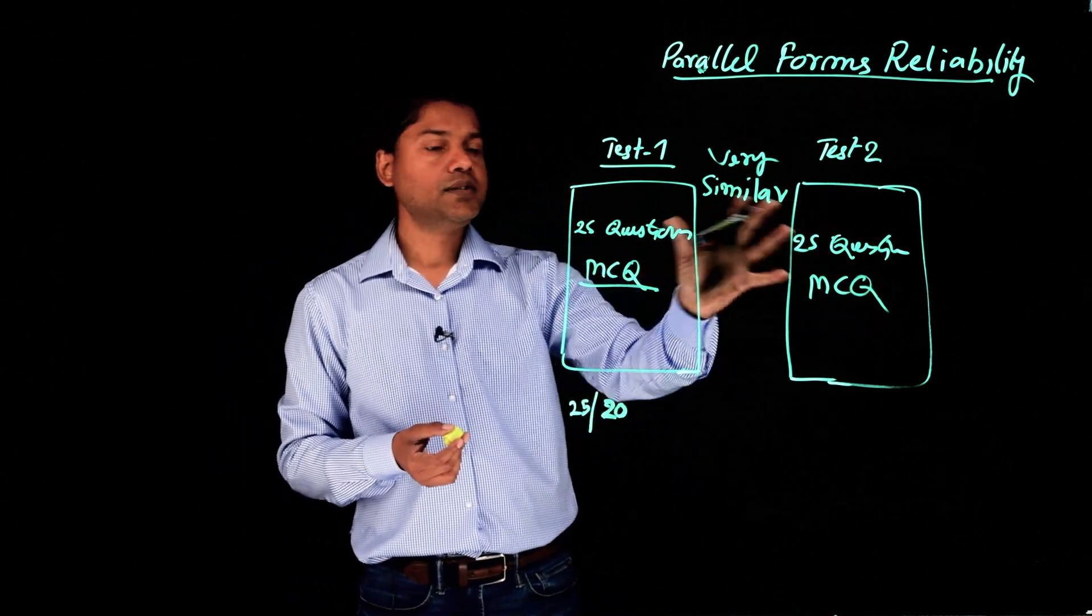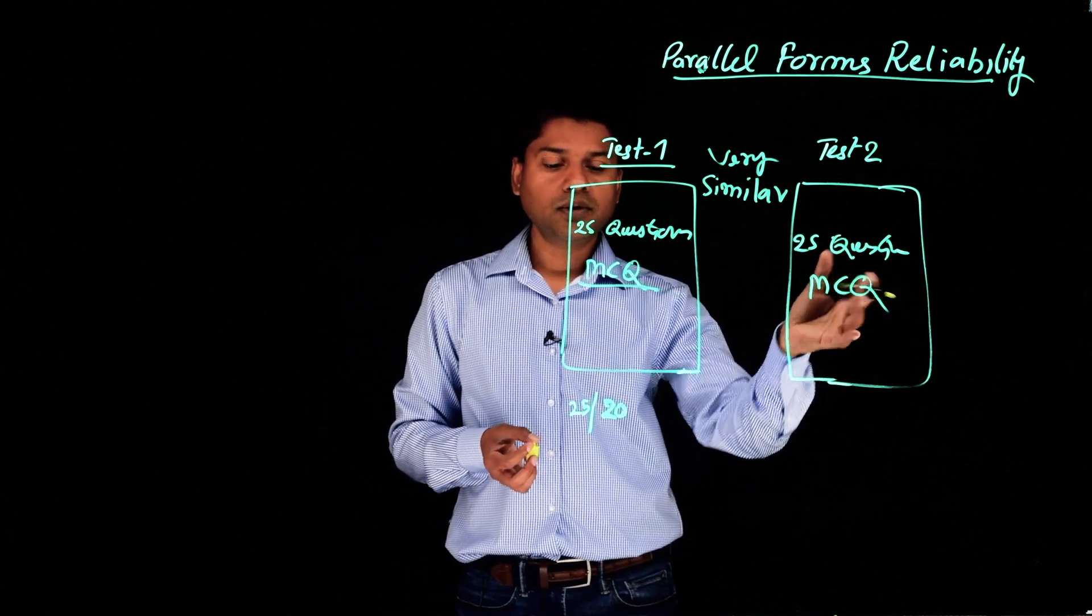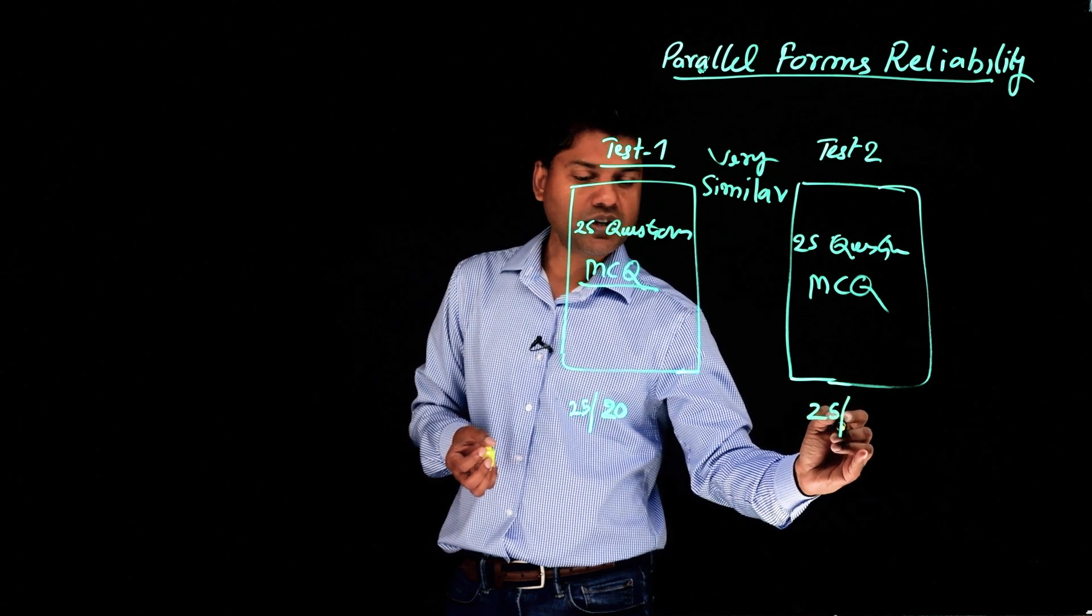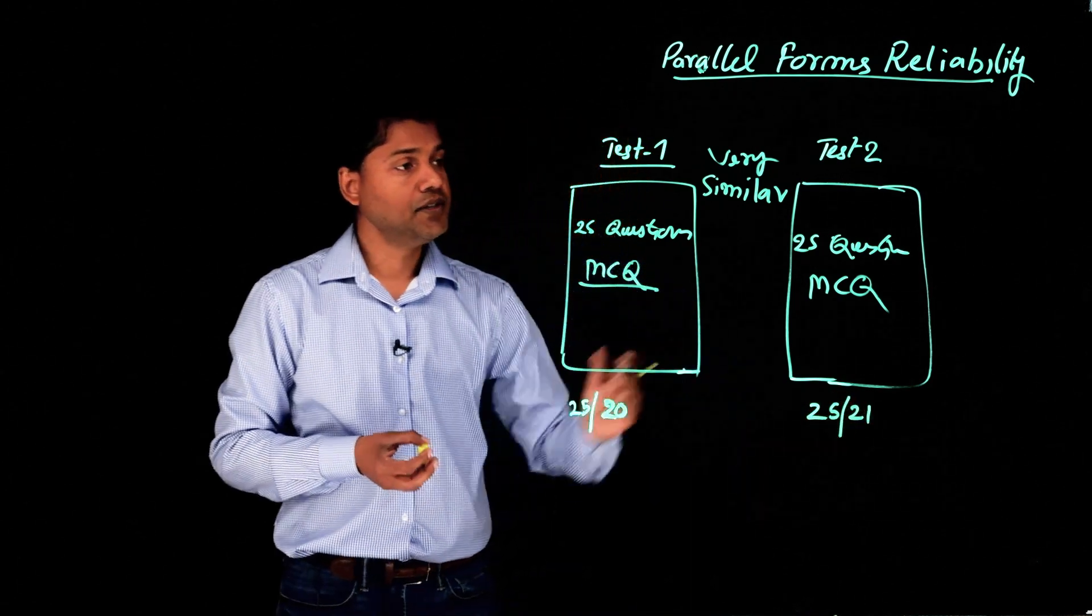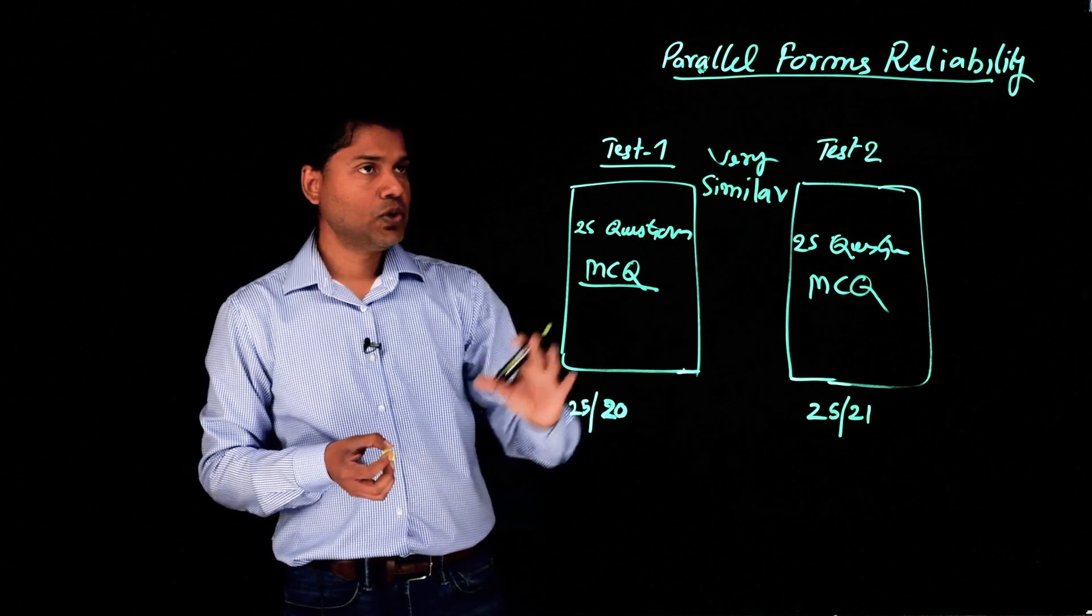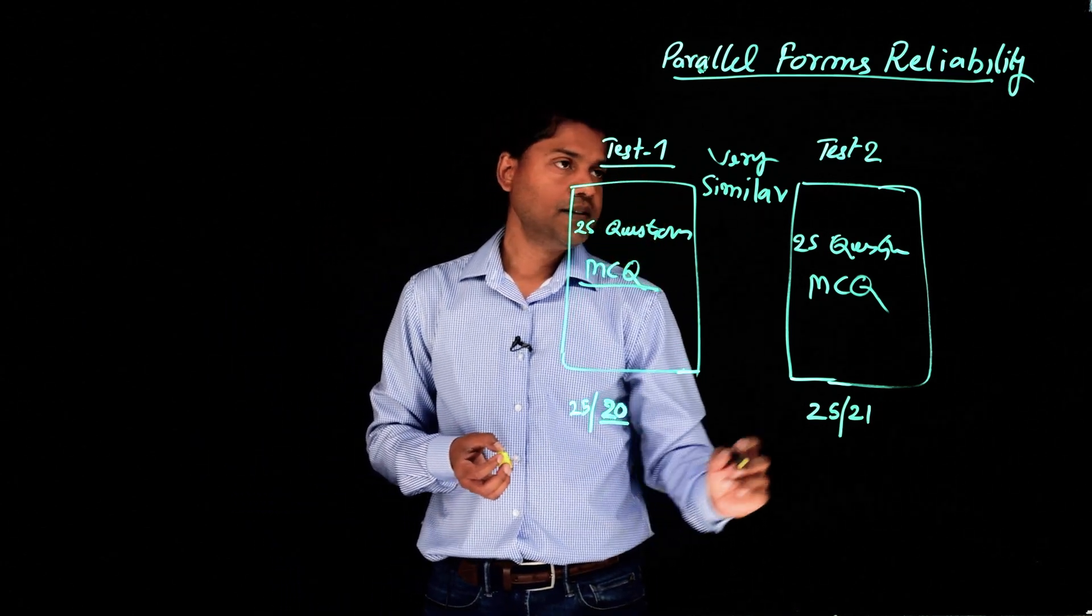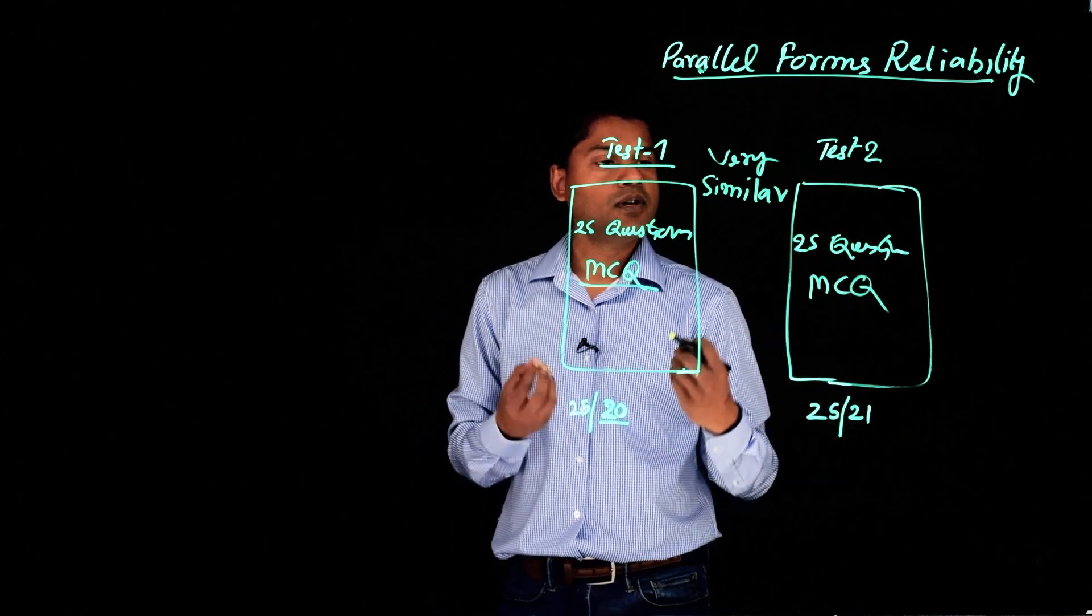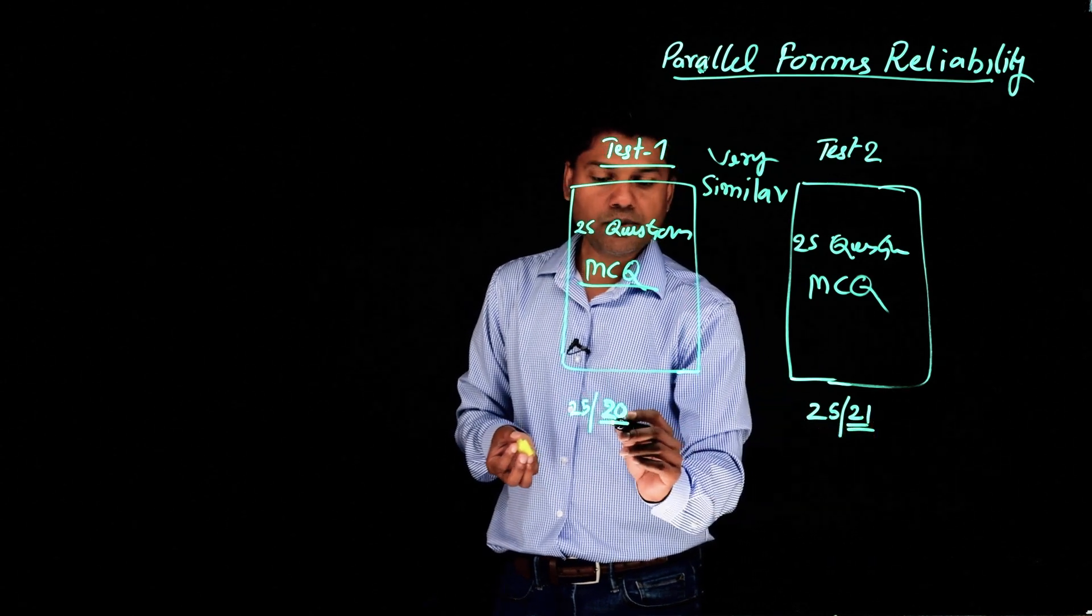If these two tests are similar, they are measuring the same concept, same structure, then we should expect similar performance here too. Let's say this time he got 21 in this test. So in test one, a particular student got 20 right. In another test, which is very similar, same structure, measuring the same concept, got 21.